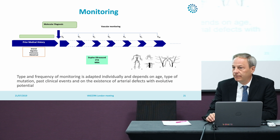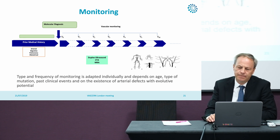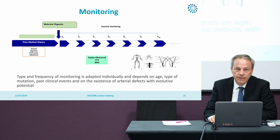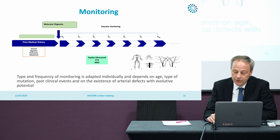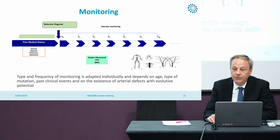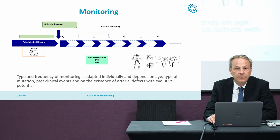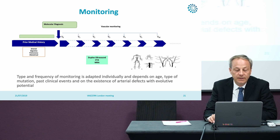Patient monitoring is an important question. Monitoring is important due to the severity of the disease and the evolutive potential of arterial defects. It has to be adapted individually. The means of monitoring would be duplex ultrasound, CT scan, or MRA, and depending on the country and type of medical care system, these types of surveillance should be adapted.